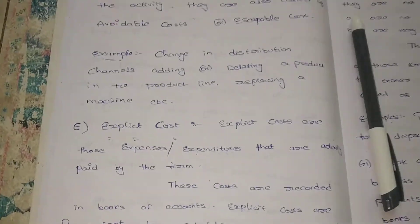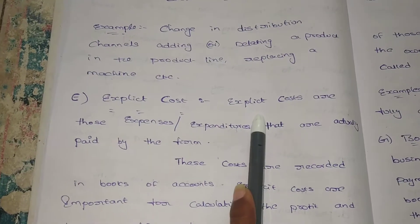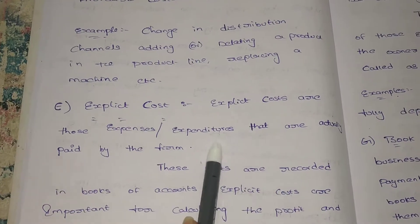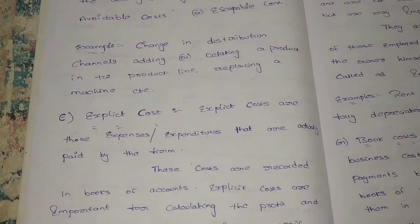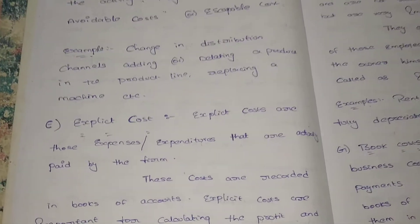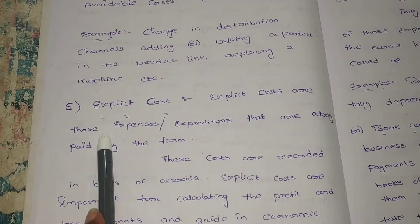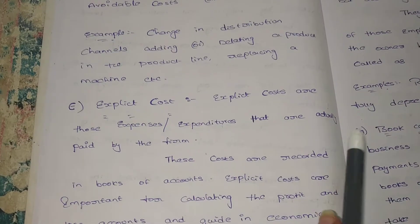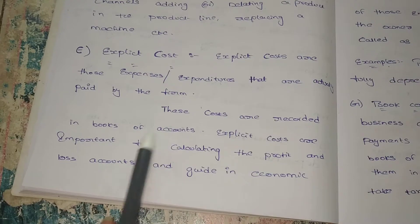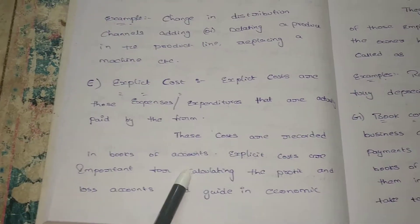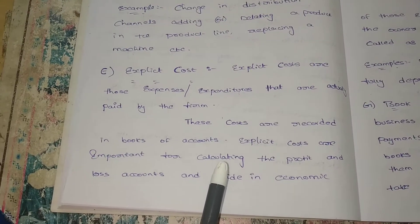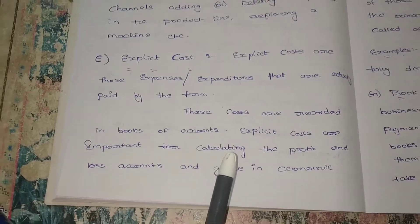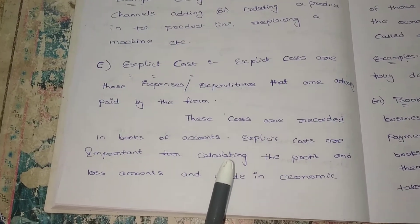Our next cost is explicit cost. Explicit costs are those expenses or expenditure that are actually paid by the firm. These costs are recorded in the books of accounts. Explicit costs are important for calculating profit and loss accounts — while preparing financial statements, you prepare the profit and loss account, and for that, these explicit costs are very important.